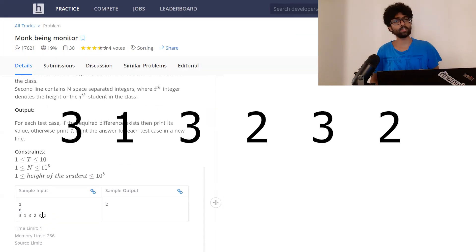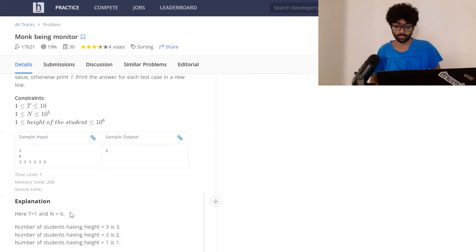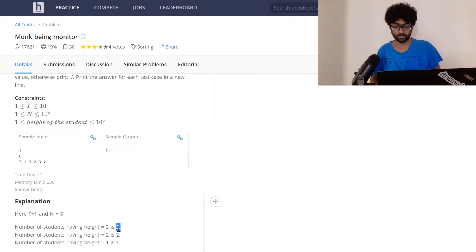The frequency of three is three. The frequency of two is two and the frequency of one is one. Now, in this case, the maximum difference is three minus one, which is two and h1, which is three, is greater than h2. That is why our output is two.